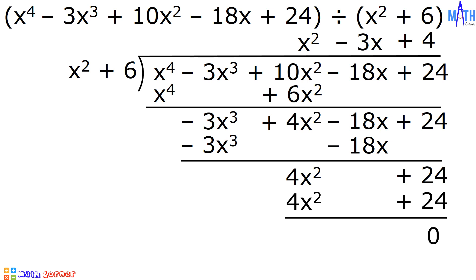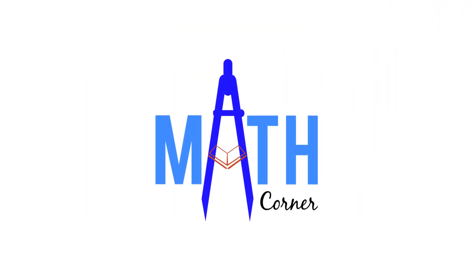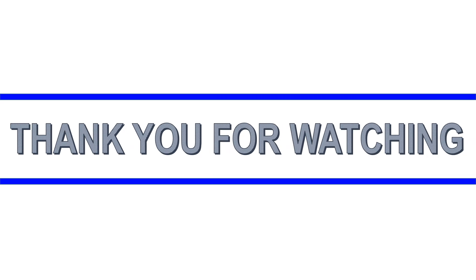The quotient is x squared minus 3x plus 4, and the remainder is equal to 0. We can write the answer as x squared minus 3x plus 4. And that is how to divide polynomials using long division. That's all for this video. Thank you for watching.